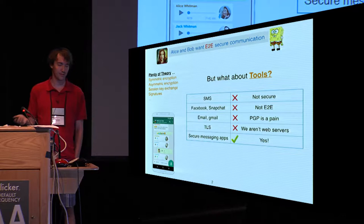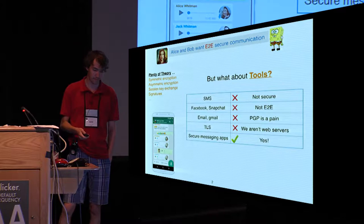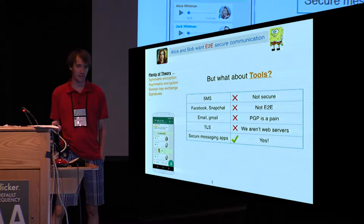But what tools do we have in practice that might actually be usable? SMS text messaging is typically not secured this way. Various social media websites don't do end-to-end encryption. Email isn't encrypted by default. You can try to use something like PGP, but that's generally accepted to be somewhat of a pain and hard to use correctly. TLS isn't really appropriate to use here. We're not web servers with certificates, just ordinary people.